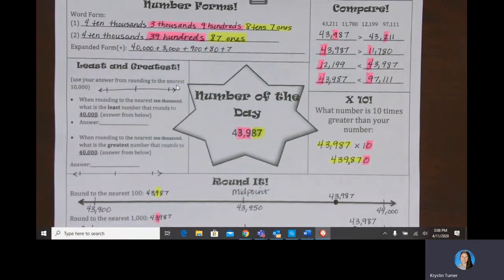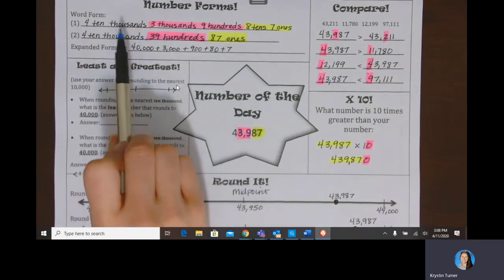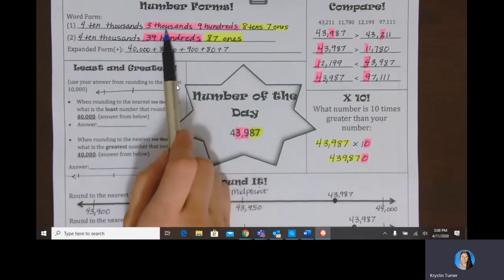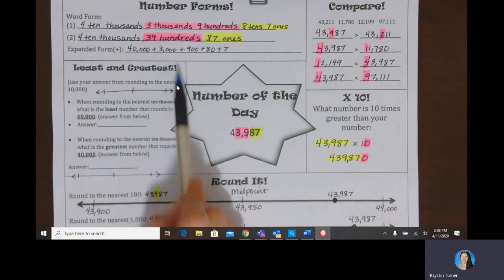Whole number of the day, 43,987. If we're thinking about word form, we can start by place value. The four is in the ten thousands place value, or 40,000. The three is in the thousands place value, so 3,000.